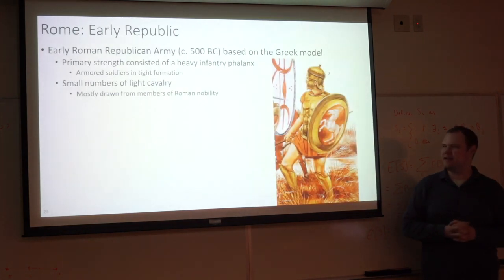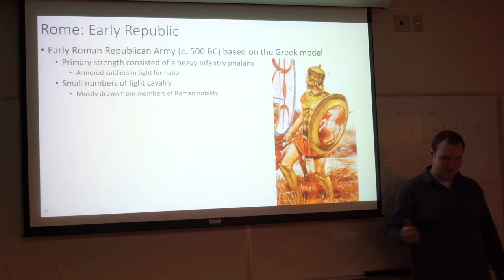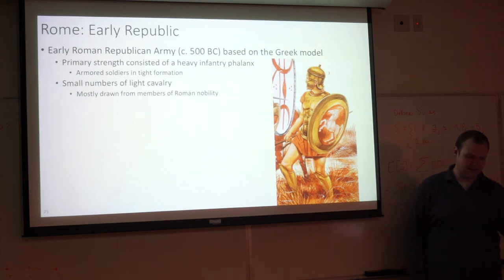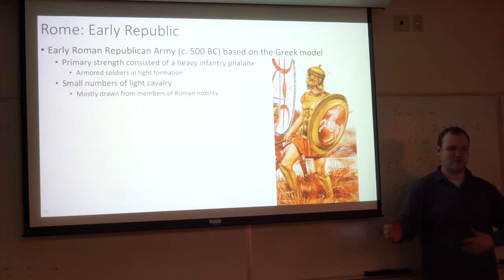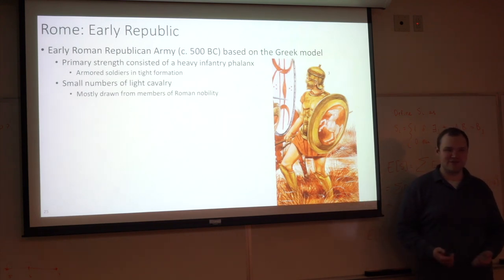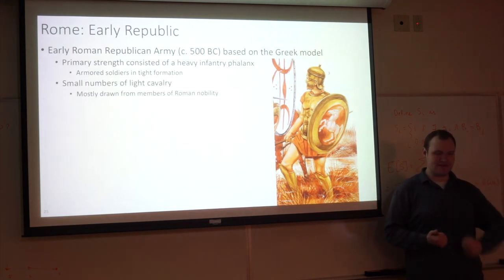Now we get to Rome — my least favorite topic because there's way too much stuff to talk about. So I'm going to try to cover only the most important. The early Roman Republican army, essentially a descendant of the Roman kingdom's army, was based on the Greek model. One of the things you'll notice about the Romans is that they invented very few things — they mostly adopted, borrowed, or stole ideas from pretty much everybody else, but then implemented them much better than anyone who initially developed them.